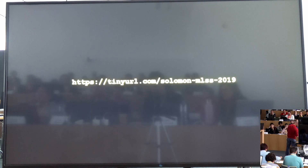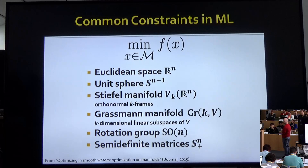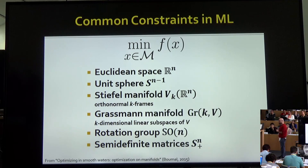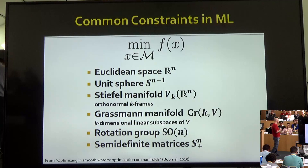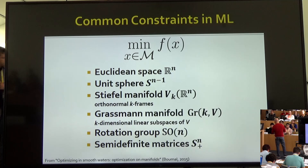What we'll spend our time talking about this morning is optimization problems in machine learning where the variable isn't just a vector in Euclidean space, but has some additional structure. In machine learning, whether you're using TensorFlow, deep learning tools, or something more classical like SVMs, all these tools involve writing down some optimization problem — a loss function — and minimizing it over some constraint set, which I'll call capital M.